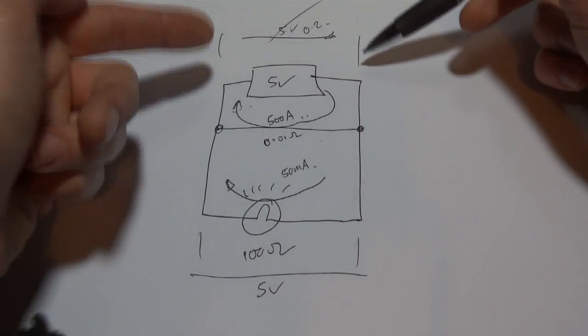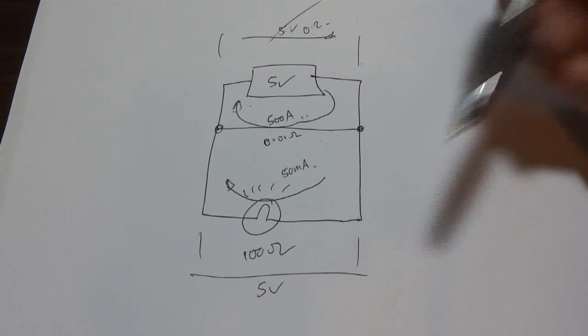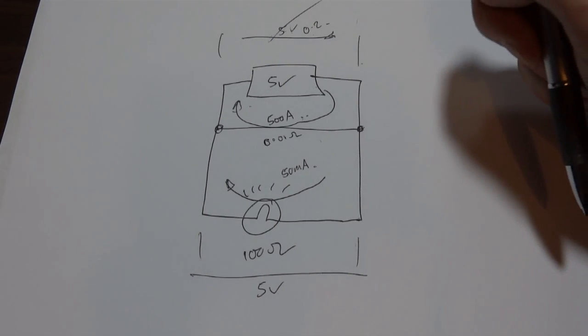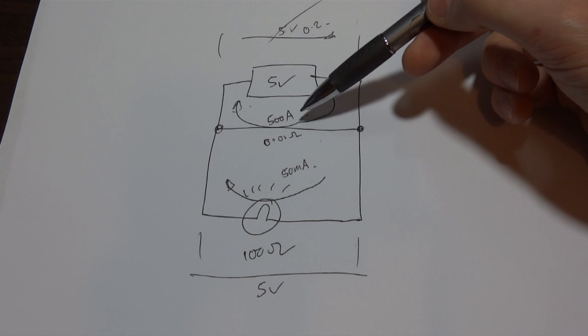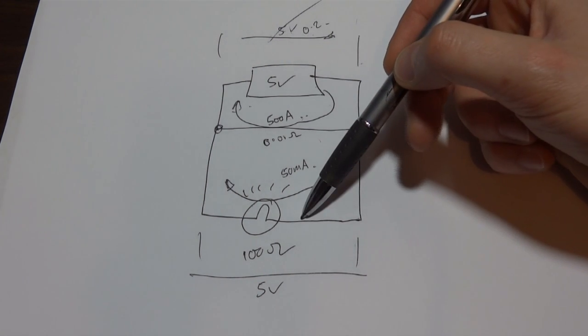So drawing 500 amps, it can still maintain 5 volts here and therefore there's still 5 volts across the bulb and the circuit still works. And if we measured the current in the circuit, we'd find there's 500 amps across here and there's 50 milliamps here.